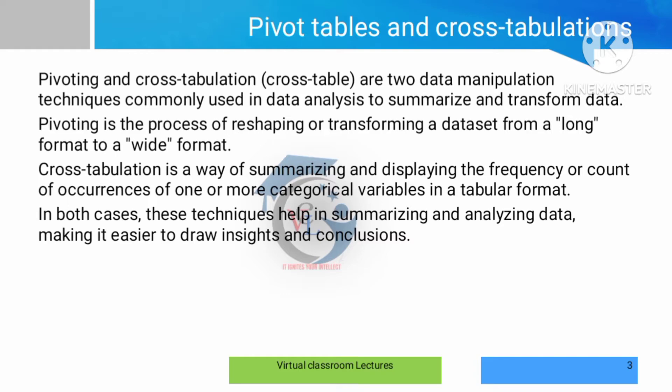Cross tabulation is also a way of summarizing and displaying data. It counts the number of occurrences of categorical values. For example, if there is a student database with a number of students, we can look at a particular subject and see all the department students.